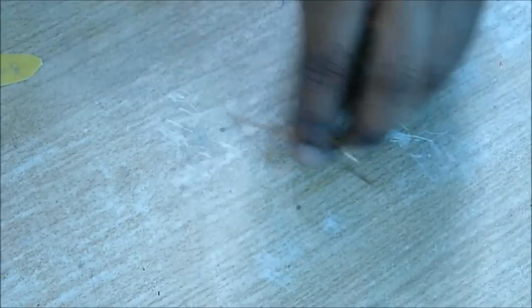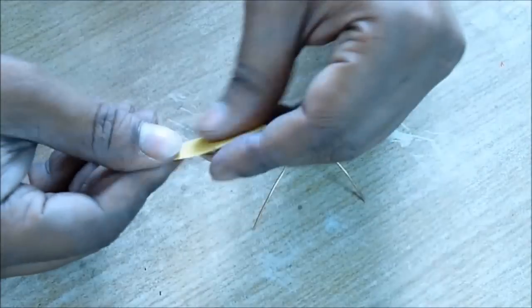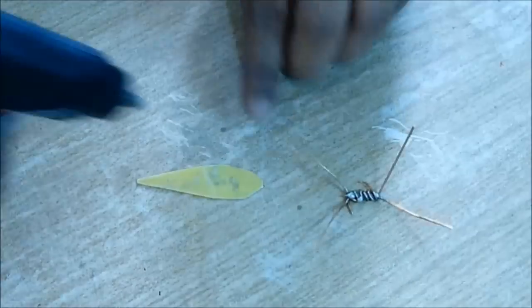Take some copper wire and twist it to make four legs like this. Take some plastic, cut it like this and glue it on top of it.